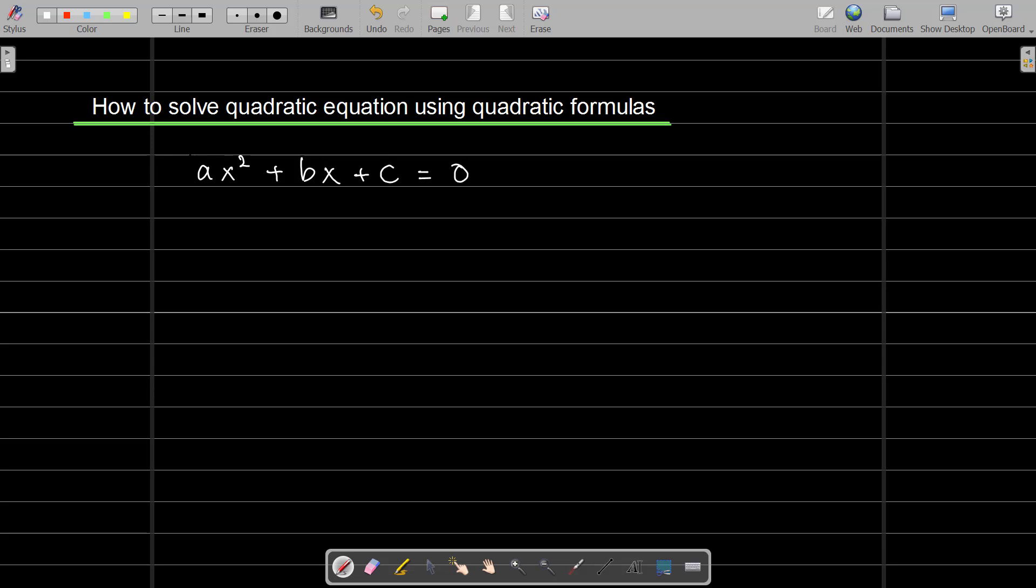This is the standard form of quadratic equation. The number in front of x² is a, the number in front of x is b, and this is c or konstanta.